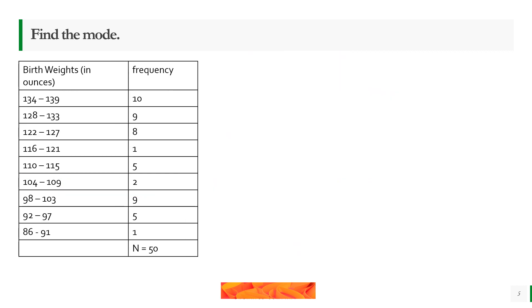This time, we're going to get the mode for this birth weights example. Obviously, this is our modal class. When we find the lower boundary, that is 133.5. Our delta 1 is 10 minus 9, which is 1. Our delta 2 is 10 minus 0 because there's nothing above, so that is 10.